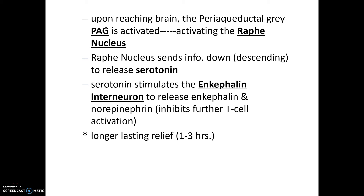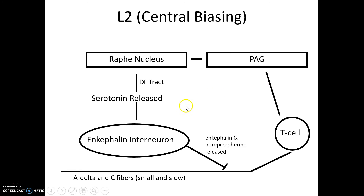This can last up to one to three hours, versus our level one pain control which only occurs for as long as the stimulus of the A-beta fiber is occurring. Here, instead of a sensory signal, we want to increase the amount of C fiber stimulation to activate the T cell, then move up to activate the periaqueductal gray matter, which causes the raphe nucleus to release serotonin. That serotonin release then causes the enkephalin interneuron to release enkephalin and norepinephrine to inhibit the activation of the T cell sending the pain signal.